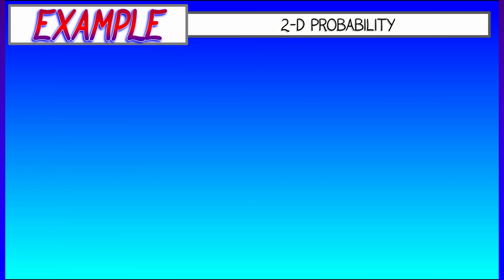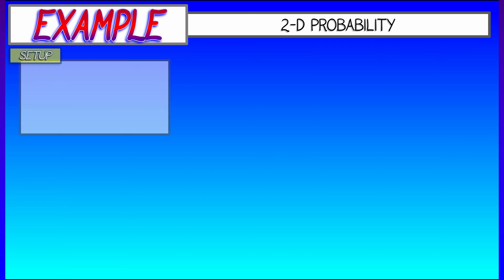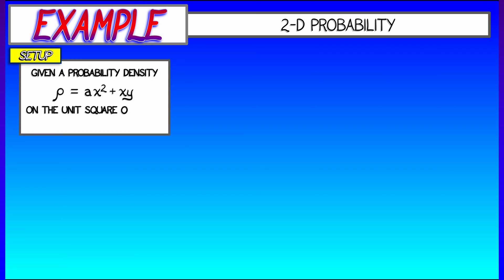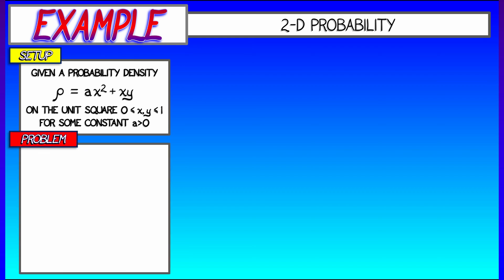Let's look at an example where we're doing probability in 2D. Let's say we have a probability density on the unit square, where X and Y are between 0 and 1, and this density is of the form AX squared plus XY for some positive constant A. What constant is it? How do we figure that out?